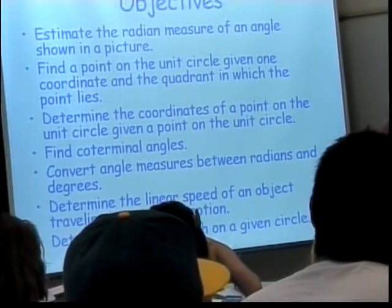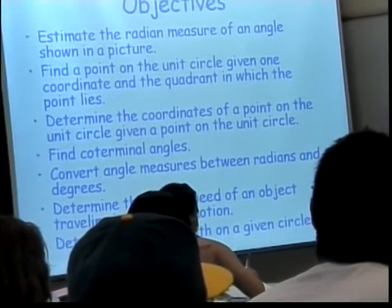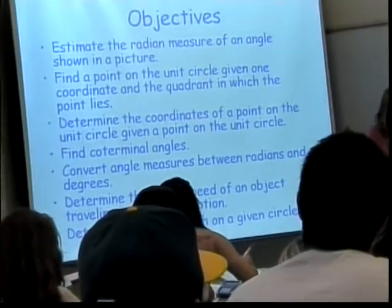We're going to talk about coterminal angles. We're going to convert angle measures between radians and degrees. We're going to look at linear speed of an object traveling in a circle.